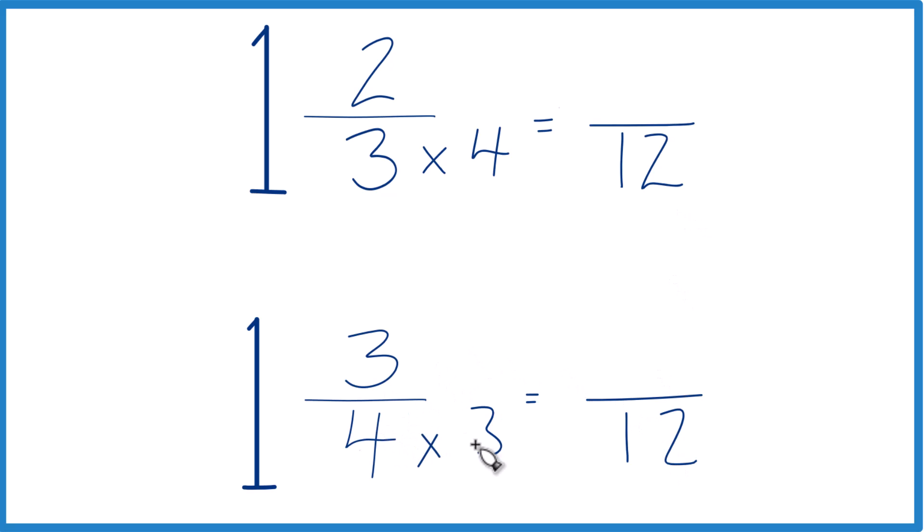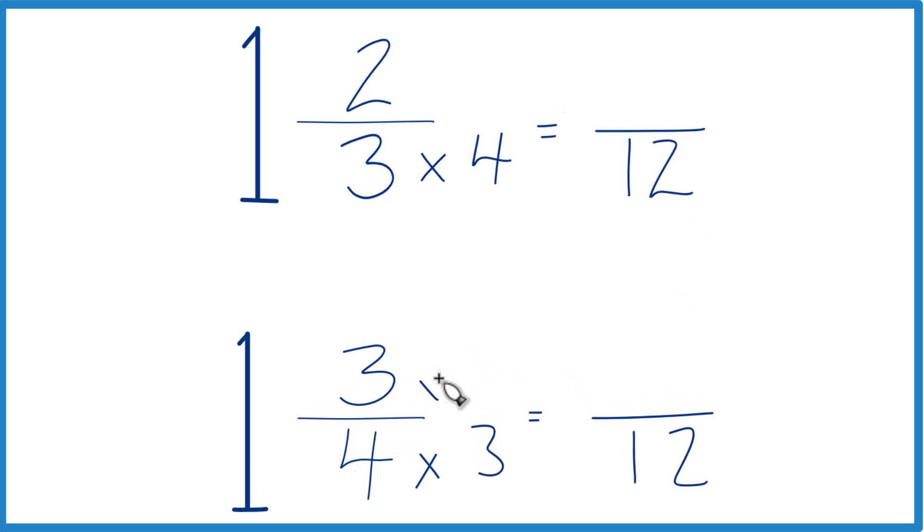We can't just multiply the denominator by 3, we need to multiply the numerator by 3 as well. 3 over 3, that's just 1, so we're multiplying by 1. We don't change the value, just the way it's represented. 3 times 3, that's 9. And 9 twelfths has the same value as 3 fourths. These are equivalent fractions.